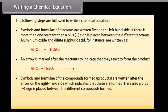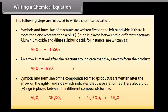Symbols and formulae of the products are written after the arrow on the right-hand side, indicating that these are formed. A plus sign is placed between the different products formed. For example: Al₂O₃ + 3H₂SO₄ gives Al₂(SO₄)₃ + 3H₂O.